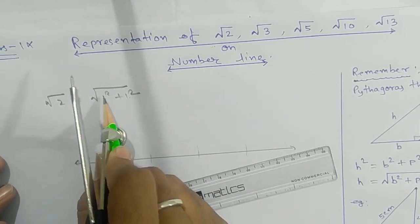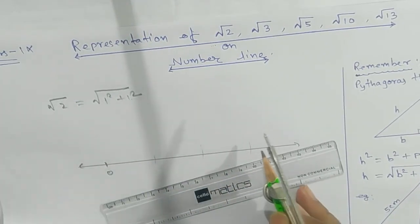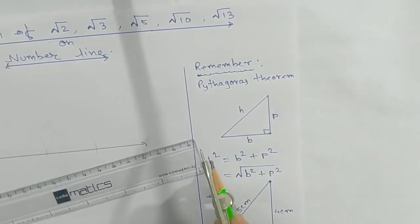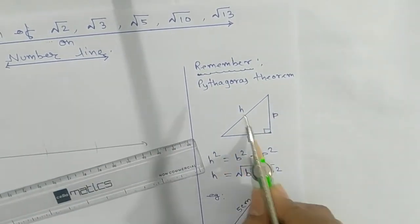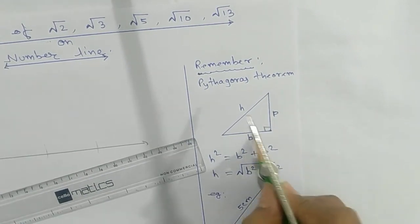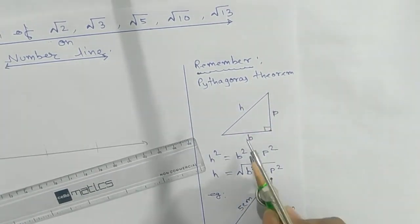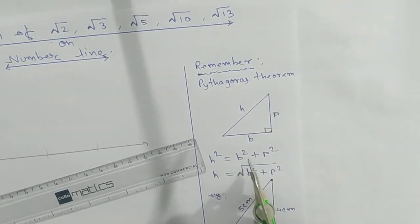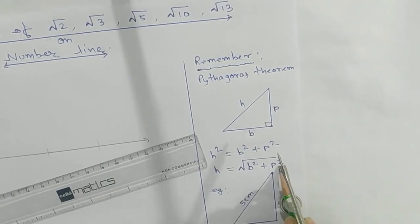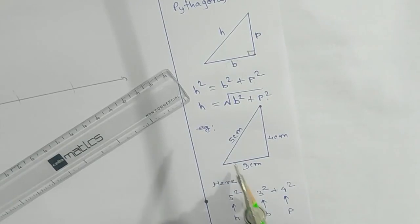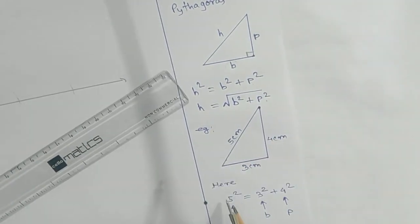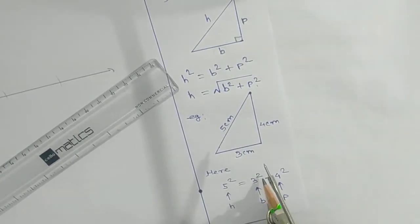Why are we taking 1² + 1²? Remember, the Pythagorean theorem says that hypotenuse squared equals base squared plus perpendicular squared. That means the hypotenuse can be written as root over (B² + P²). For example, if base is 3 units and perpendicular is 4 units, then the hypotenuse squared equals 3² + 4², giving 5 units.